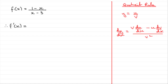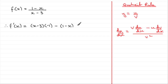So, if we use that here, u is the 1 minus x and v is the x minus 3. We start off with the bottom of the fraction times the differential of the top: the bottom of the fraction is x minus 3, multiplied by the differential of the top. Differential of 1 is 0, differential of minus x is minus 1. Then we've got minus the top of the fraction, 1 minus x, times the differential of the bottom. Differential of x is 1, differential of minus 3 is 0, so that's just 1. All divided by the bottom of the fraction, x minus 3, squared.